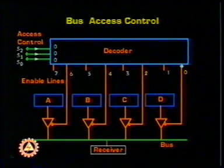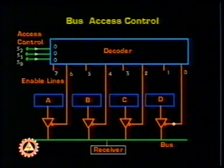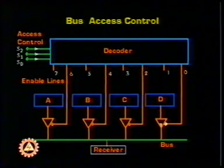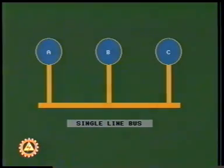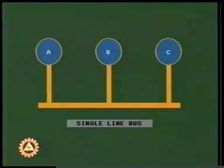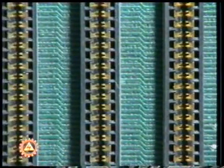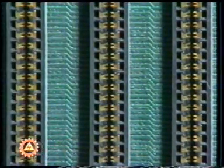A simple access control may be implemented using tri-state gates and a decoder. Depending on the selection input, only one source is allowed to put data on the bus, while the other sources remain insulated from the bus due to their high impedance states. In practice, a bus contains a number of lines in parallel — this is called a multi-line bus. Such multi-line buses are found on printed circuit boards, between boards as a backplane bus, or even within an integrated circuit chip.